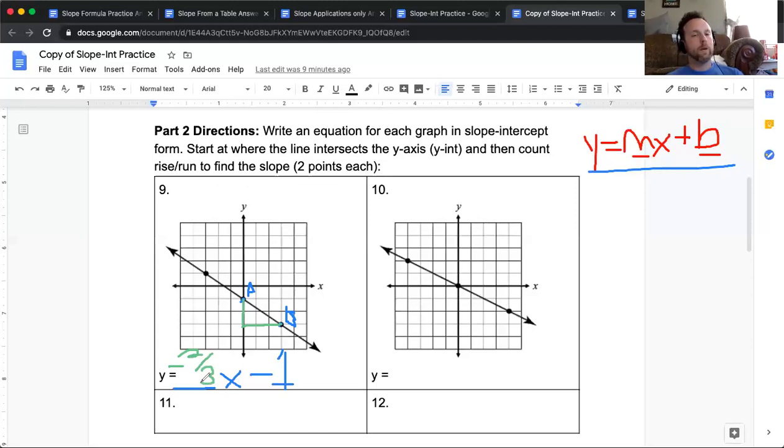But since one of my directions was negative, that makes my whole slope negative. So I look at my graph here. I've got where it intersects at negative one. And then my slope is negative two thirds. So that leaves my equation as y equals negative two thirds x minus one.